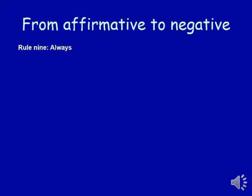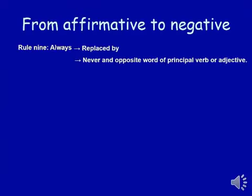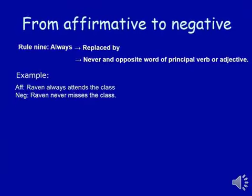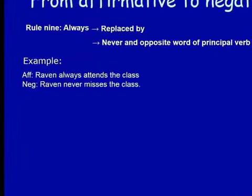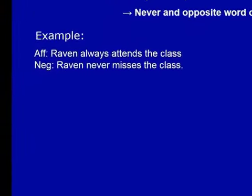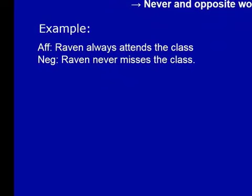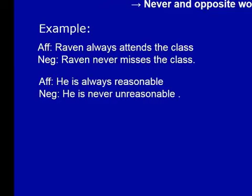Rule number nine: 'always' is replaced by 'never' and the opposite word of the principal verb or adjective. For example: 'Robin always attends the class' becomes 'Robin never misses the class.' In the place of 'always,' we use 'never,' and we write the opposite word of the principal verb. Another example: 'He is always reasonable' becomes 'He is never unreasonable.'